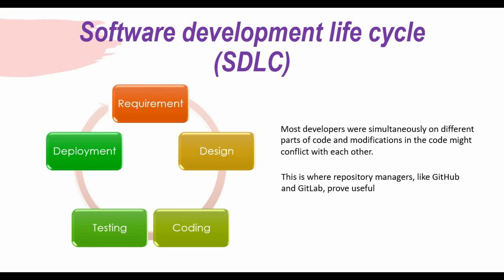To understand why we use Git, GitHub, or GitLab, you need to understand the software development lifecycle. In the SDLC, you have different phases: requirement, design, coding or building — where the main code and product is developed — then testing, and then deployment. In this process, multiple developers simultaneously work on parts of the code, making modifications that create conflicts and bugs, which is where repository managers like GitHub or GitLab become very useful.